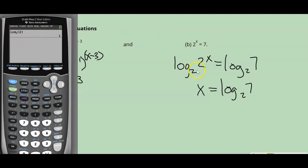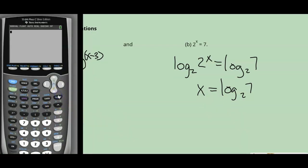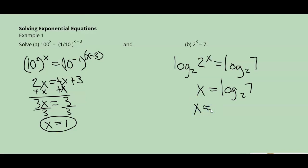We used log base 2 in order to get rid of the base on the left-hand side. That's why it cancelled to 1, bringing down just x. Now all we have to do is evaluate log base 2 of 7 using our calculator: go to math, log base, type log base 2 of 7, which is approximately equal to 2.807. So x is approximately 2.807.